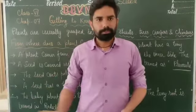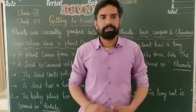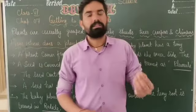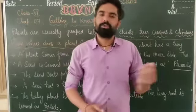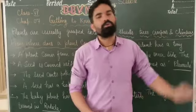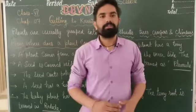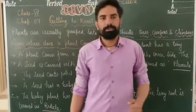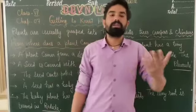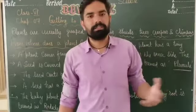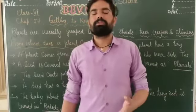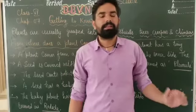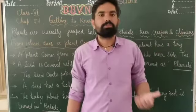अपने school के garden में भी हम देखते हैं — few are tiny grasses, some bushes, and tall trees. कुछ छोटे grasses होते हैं, उनसे बड़े plants होते हैं, और बहुत tall trees जैसे coconut tree भी होते हैं। तो plants को अपन कैसे classify कर सकते हैं?